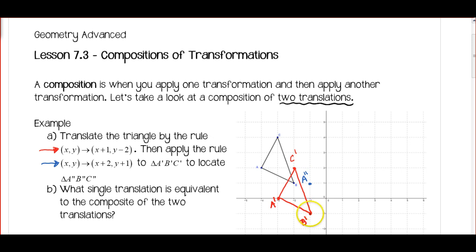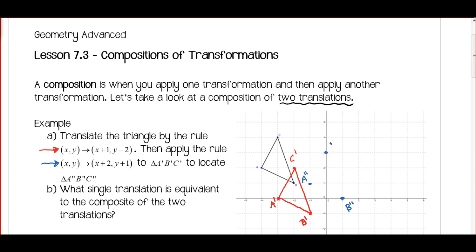For point B: to the right 2 and up 1 — here's my B double prime. Same thing with C prime: move to the right 2 and up 1 — here's my C double prime. Finish it off by drawing the triangle. And here's my second translation.